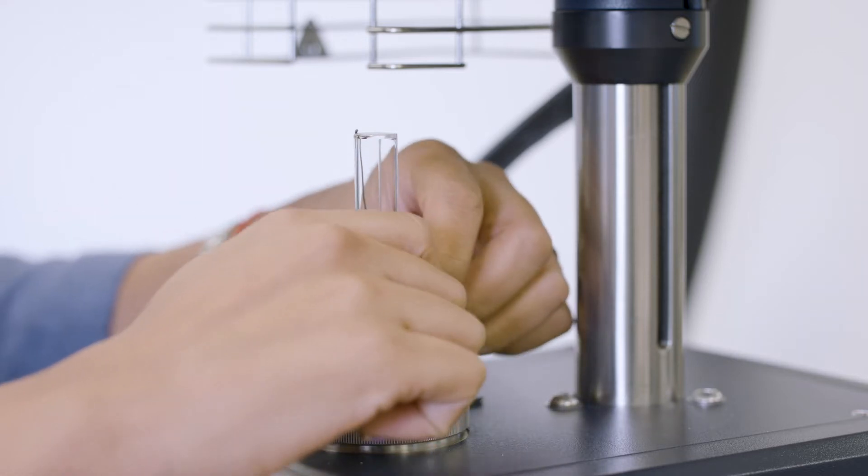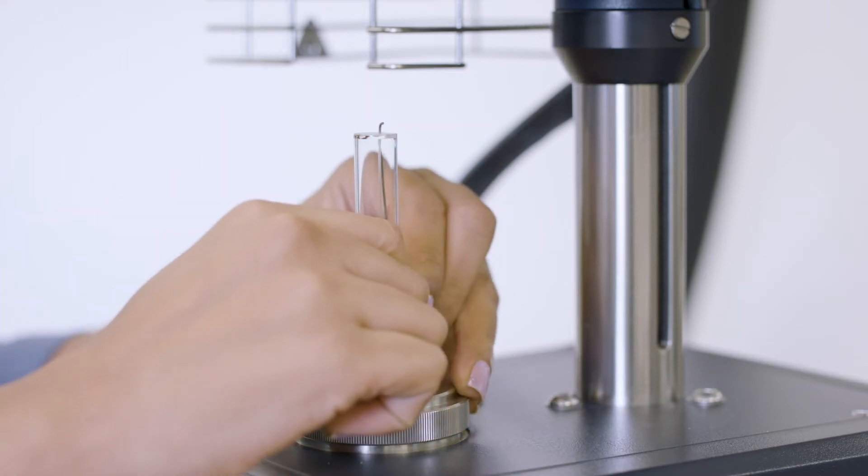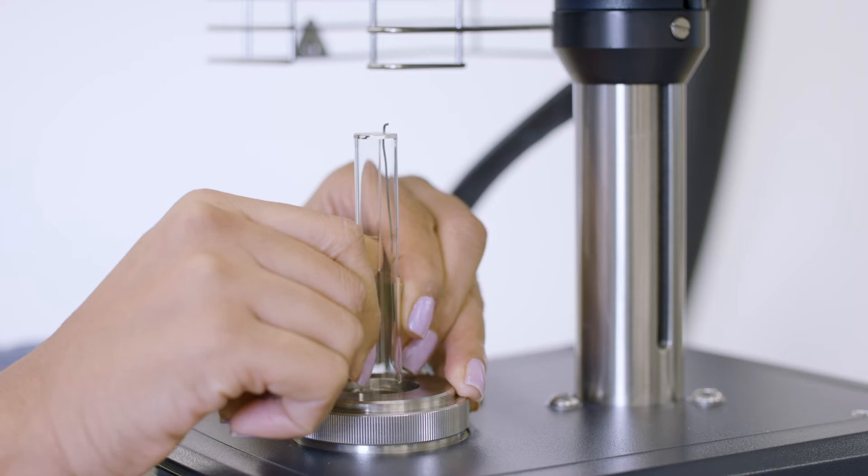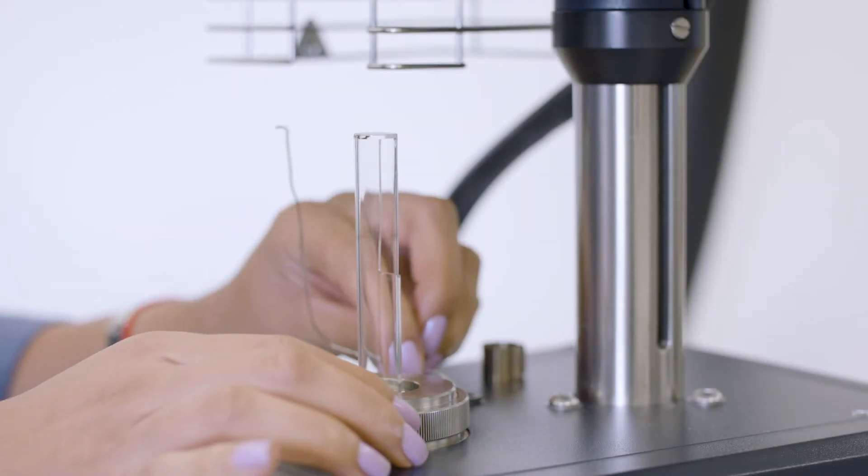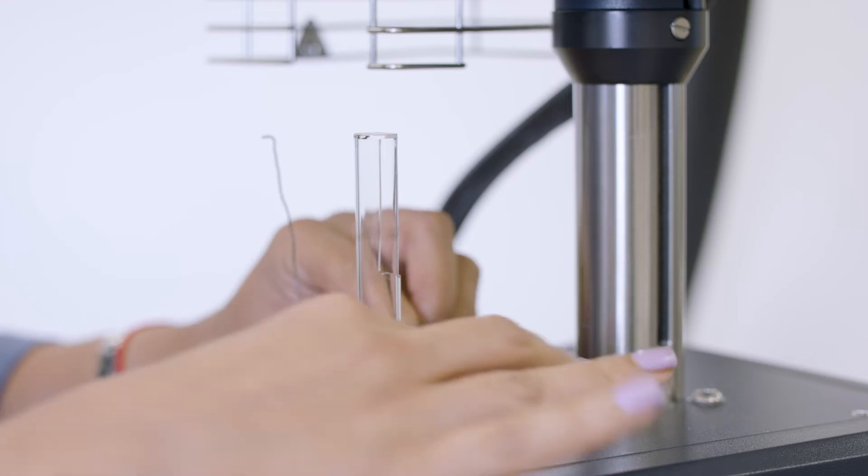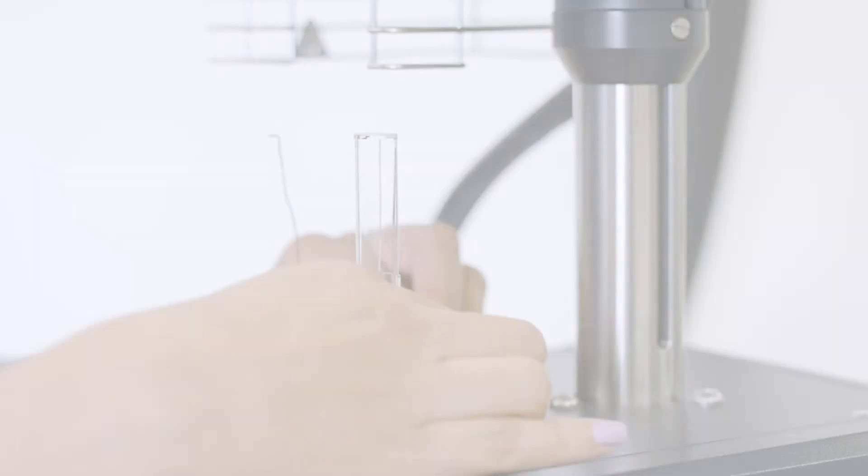Take off the spring clip that holds the sample thermocouple in place. Move the thermocouple off to the side. Unscrew the large stage nut counter-clockwise and lift it straight up.